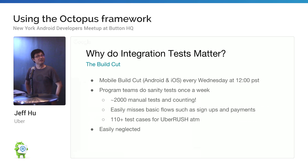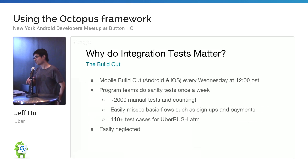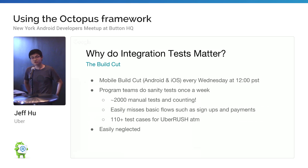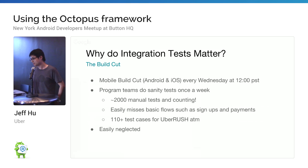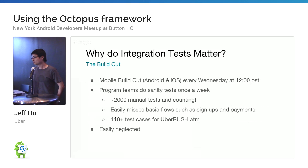So why does integration testing matter? At Uber we have a build train — a mobile build cut every week, every Wednesday at 12 Pacific time. Every week we have tons of new features getting into either the driver app, rider app, or our new Eats app. Program teams had to do manual testing once a week right after the build cut.